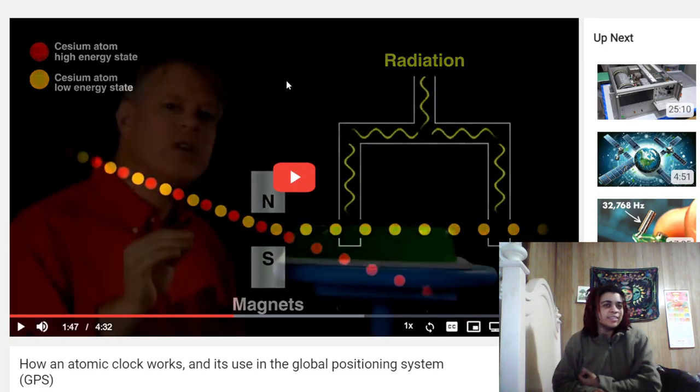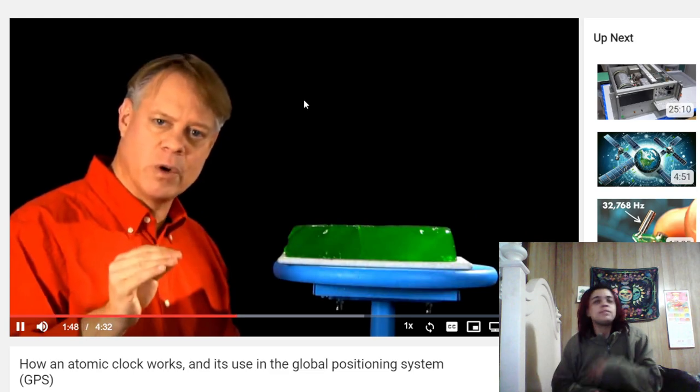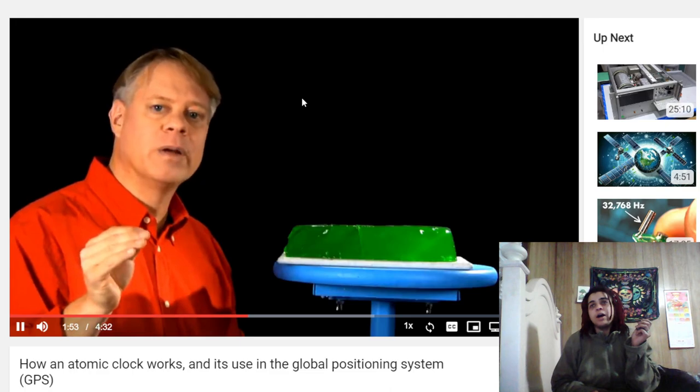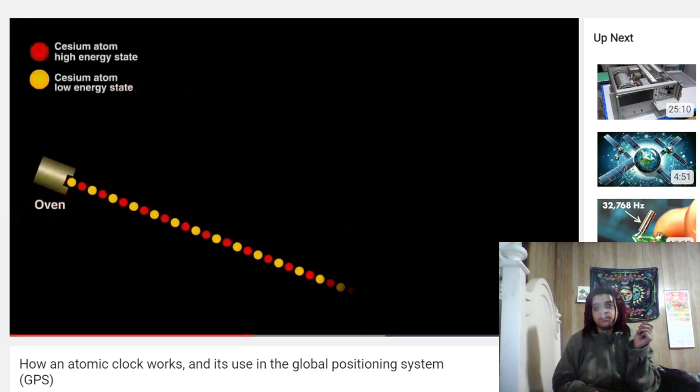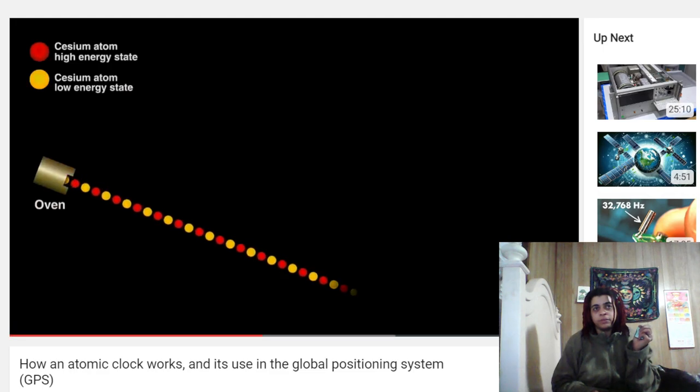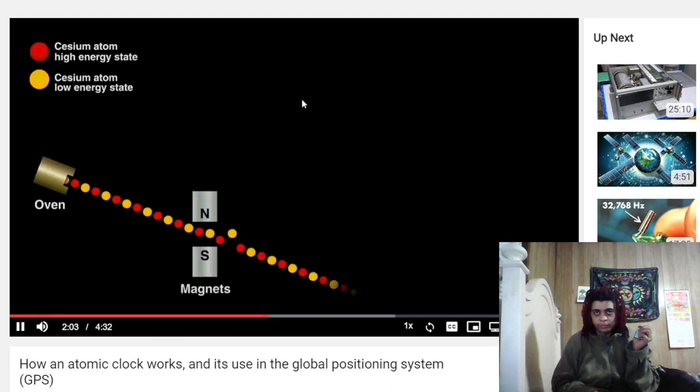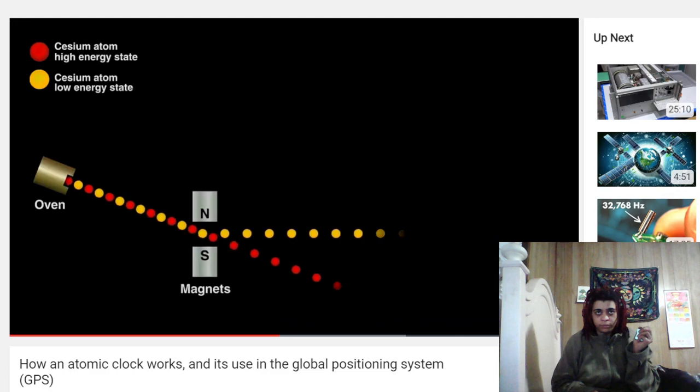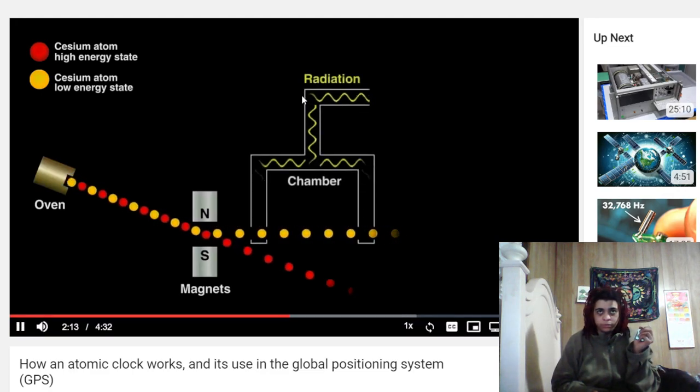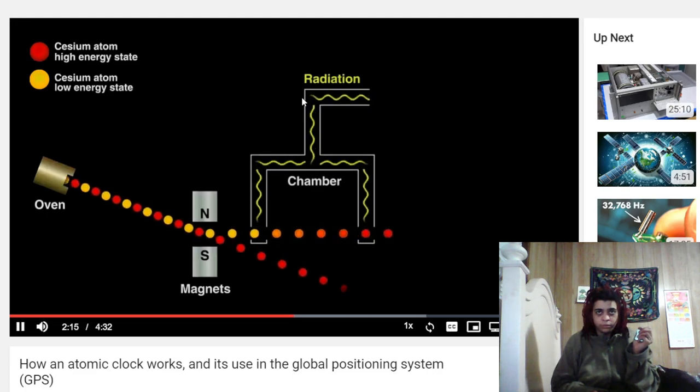For an atomic clock, these two states have two properties critical to making a clock. One, they can be separated by a magnet. And two, the lower-energy atoms can be converted to the higher-energy ones if we bombard cesium with the right radiation. In an oven, we heat cesium chloride to create a gaseous stream of cesium ions. The stream contains both the low and high-energy ions. We first flow it through a magnet, separating the two types, discarding the high-energy ones, allowing the lower-energy ions to pass into a chamber.